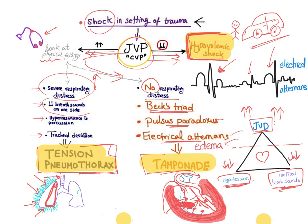For management: tension pneumothorax is treated with needle thoracotomy — push a needle through the pleura to drain the air — followed by chest tube insertion connected to an underwater seal. For tamponade, perform needle thoracocentesis into the pericardium to drain the blood, or use a pericardial window, or open thoracotomy. For hypovolemic shock, give fluids and treat the underlying cause.